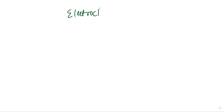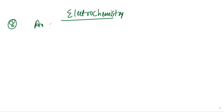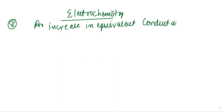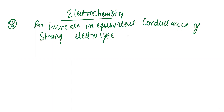Now look at the next part of electrochemistry. The eighth question is: increase in equivalent conductance of a strong electrolyte with dilution is mainly due to what? Here we are talking about increase in equivalent conductance of a strong electrolyte with dilution. This was asked in 2010.